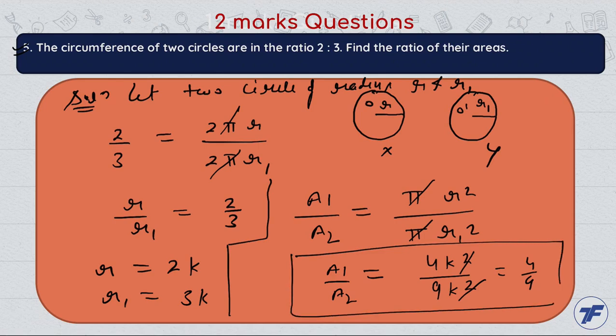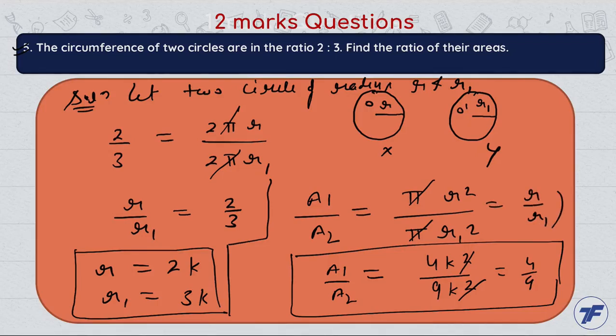Some students can also do this another way — there's no need to use the k substitution. We already have r upon r1 = 2/3. Just put the area formula directly, which gives r upon r1 squared. So directly putting the value of r upon r1, we get 4 by 9. This is the ratio of the areas of the circles.